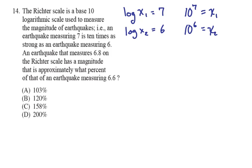So that if we were to measure 10 to the 7th divided by, we wanted to compare the strength of these two earthquakes, 10 to the 7th divided by 10 to the 6th would give you 10. And that's what it means that an earthquake measuring 7 is 10 times as strong as an earthquake measuring 6, even though 7 is just one more than 6, or just a slight percentage higher than 6.